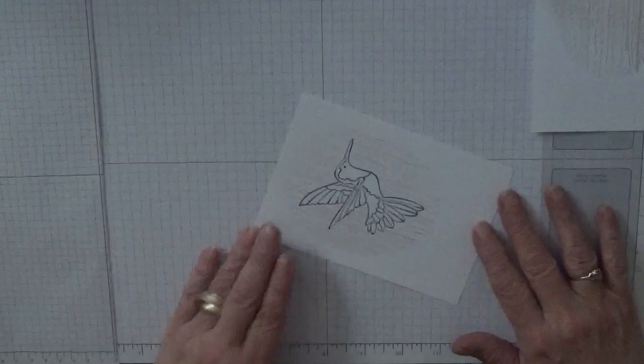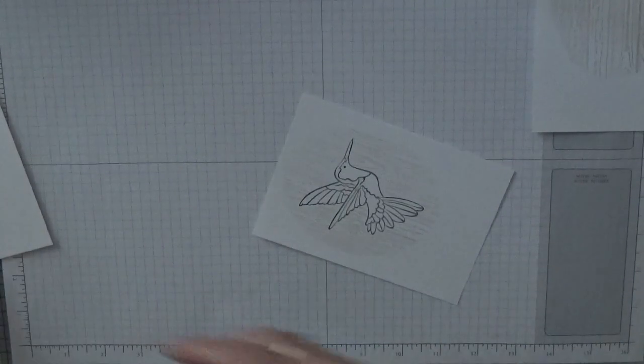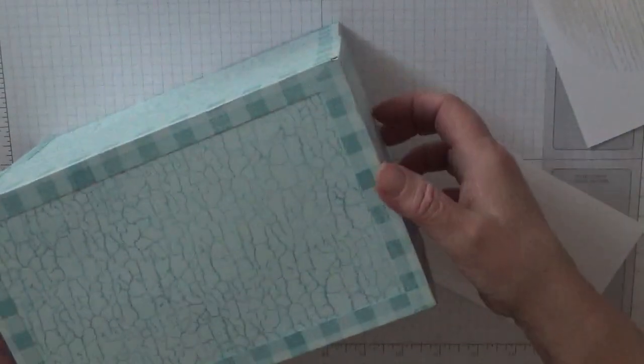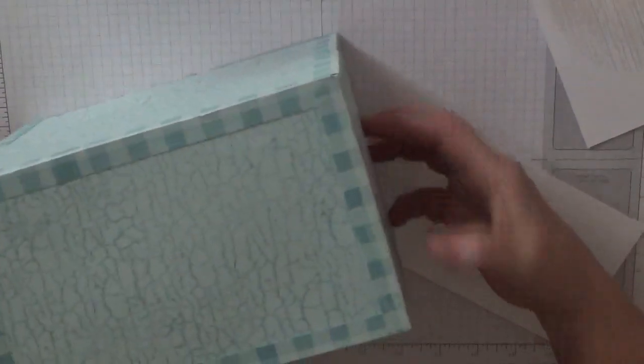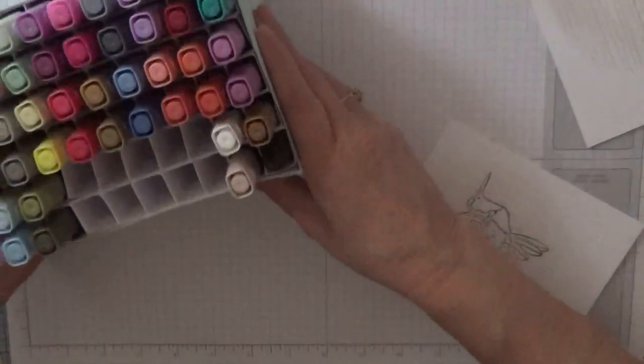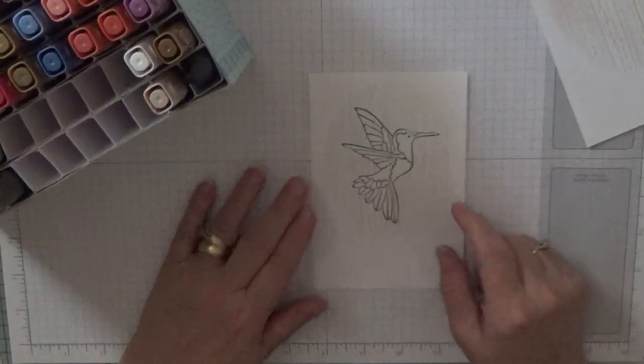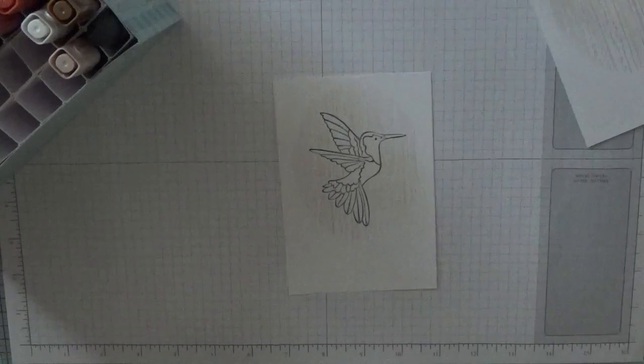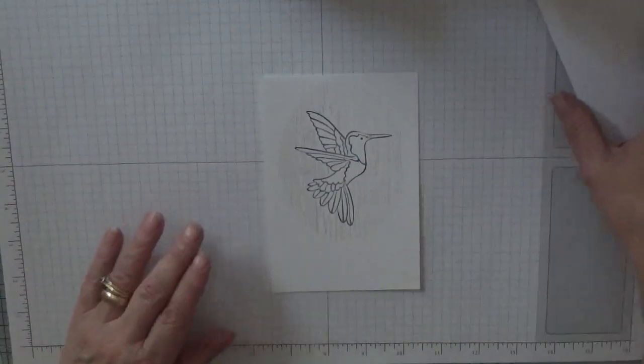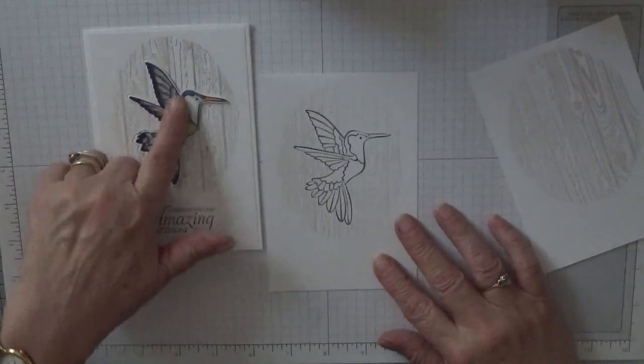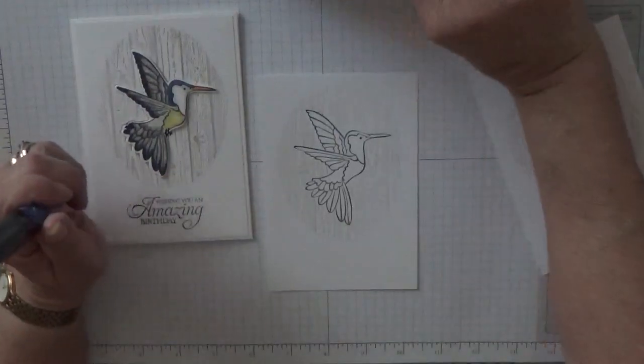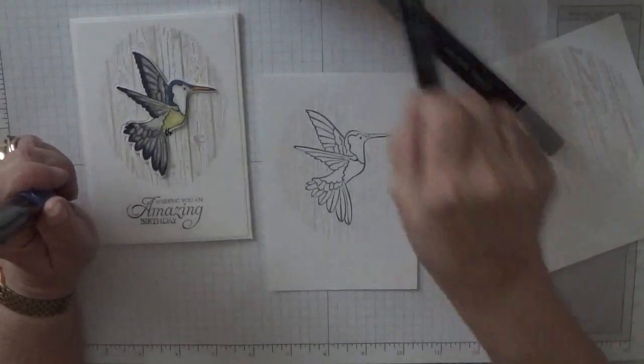And now we'll colour this bird in. I've got my new box of pens. For this. To colour this in. On this bird. I got the colours mainly off the internet. I was looking to see what colour hummingbirds were. And I was quite surprised. There's so many different colours of them.